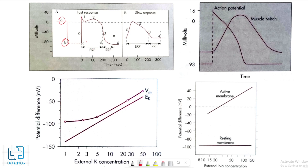Time C to D represents the effective refractory period, and time D to E represents the relative refractory period.